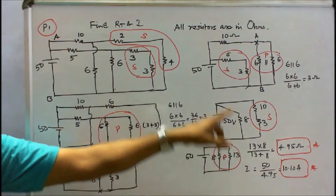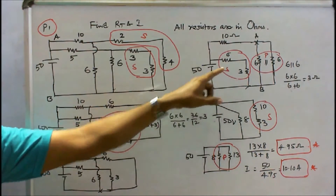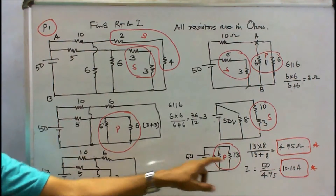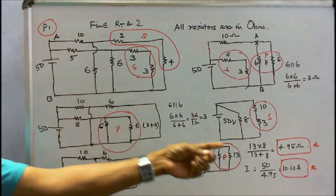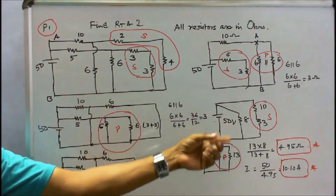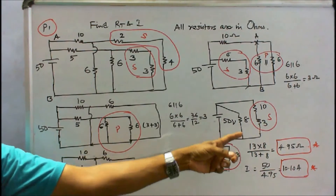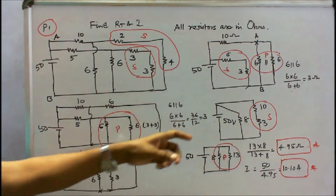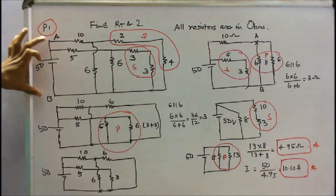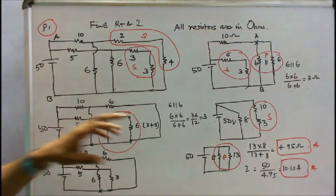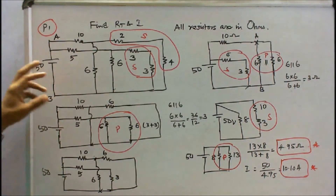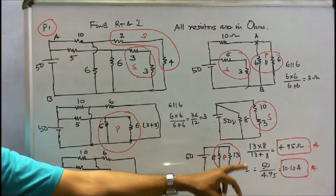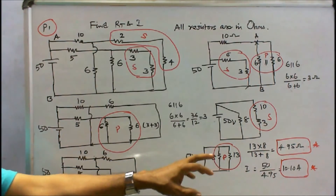Here 5Ω and 3Ω are in series, giving 8Ω. This 8Ω and 13Ω resistance are in parallel: R1×R2 / (R1+R2) = 13×8 / (13+8) = 4.95Ω. The total resistance across points A and B is 4.95Ω. The current I = V/R = 50 / 4.95 = 10.10 amps.